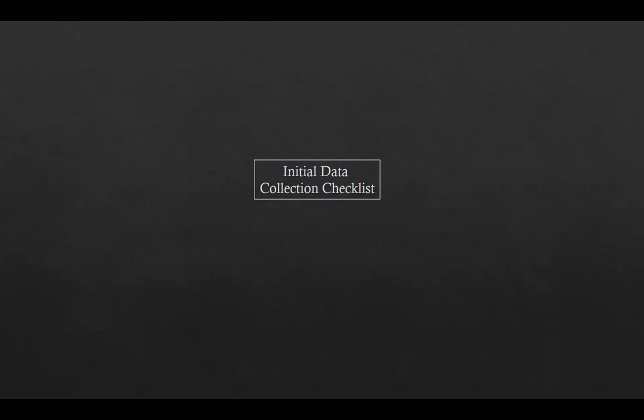The first item in this checklist is topography, which includes different maps already available and aerial or land surveys to establish control stations. The next item is climatic conditions, which includes altitude, temperature, precipitation, rain, humidity, dust, fog and cloud conditions of the area.